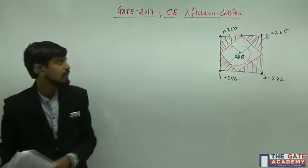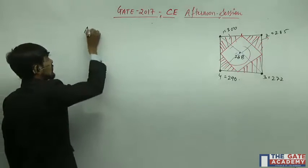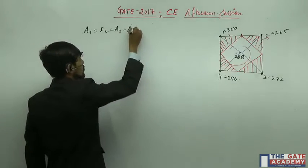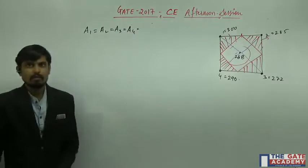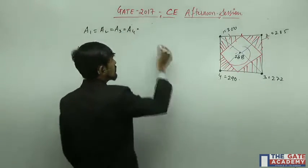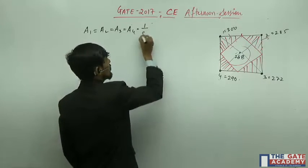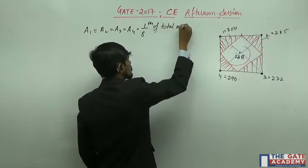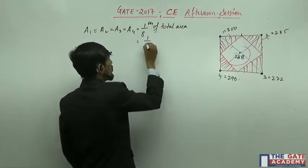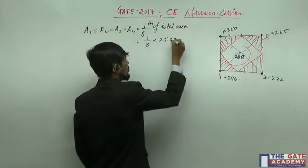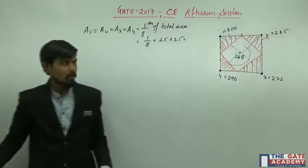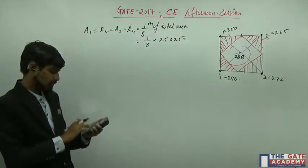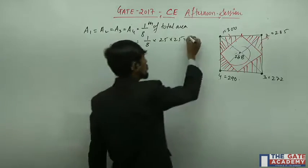From the figure, we can see that a1 = a2 = a3 = a4, and each is equal to one-eighth of the total area. That is 1/8 × 25 × 25, which gives 78.125 km².